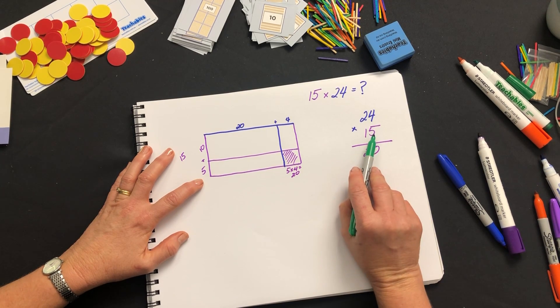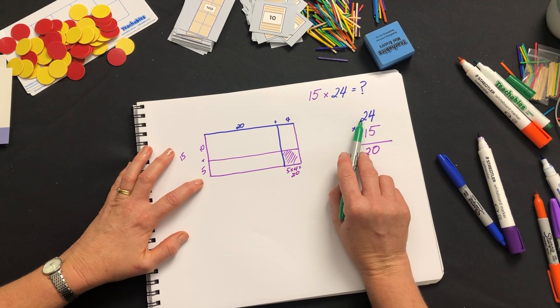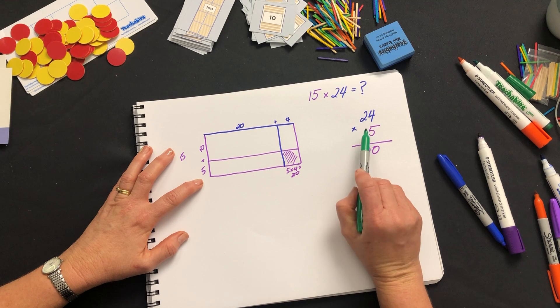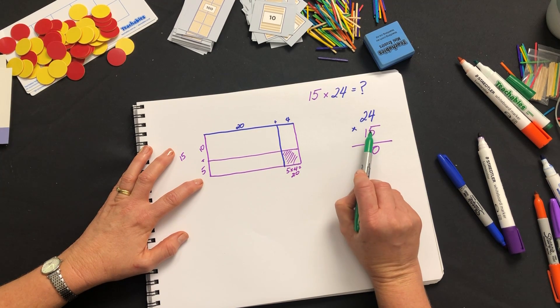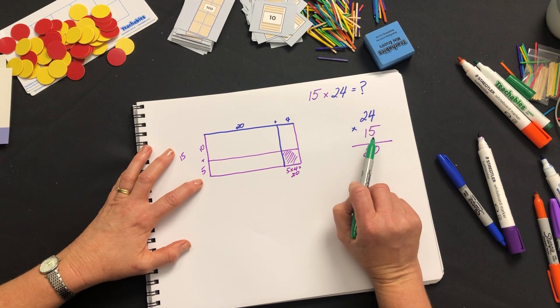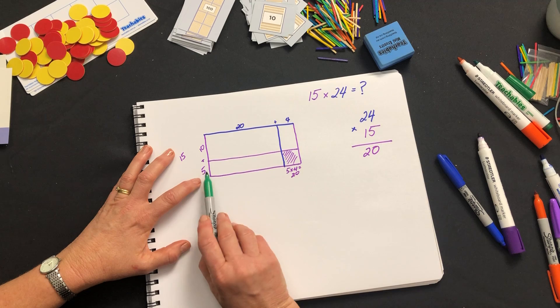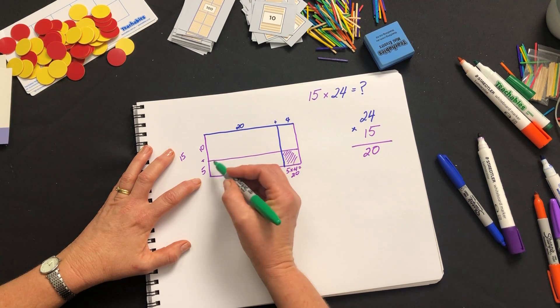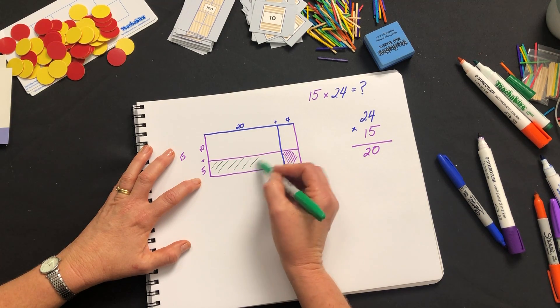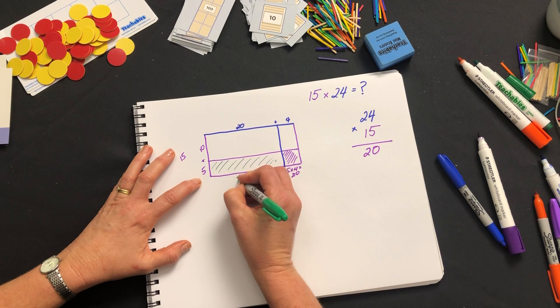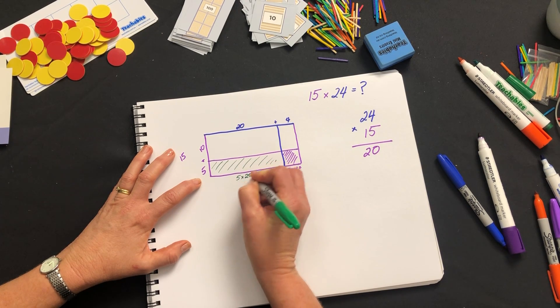Our next multiplication would be 5 times 20. Note the wording. I'm not saying 5 times 2 because it's not 5 times 2. It's 5 times 20 or 5 times 2 tens. 5 times 20 is this rectangle. 5 times 20 is 100.